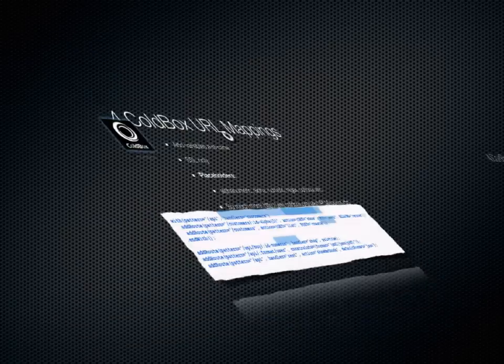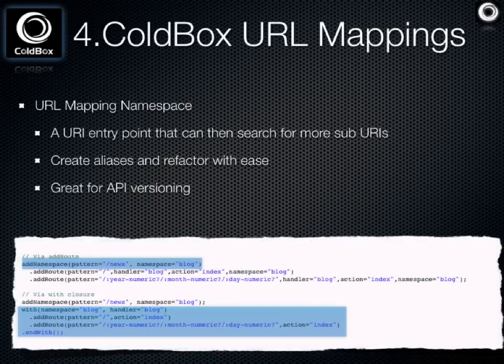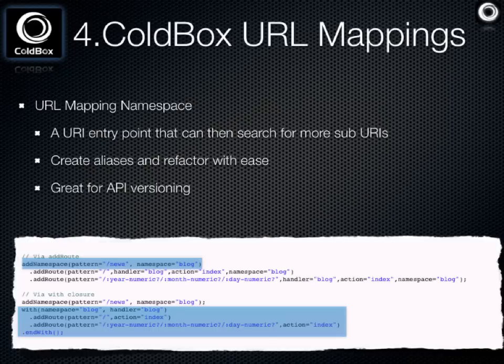You can also use namespaces. If you're building a RESTful service with different versions — version one and version two with more enhancements — you can create namespaces for the URLs so you don't have to change all the existing URLs. Namespaces are a great way to categorize or isolate different URIs into buckets, giving you a lot of flexibility especially for API versioning.